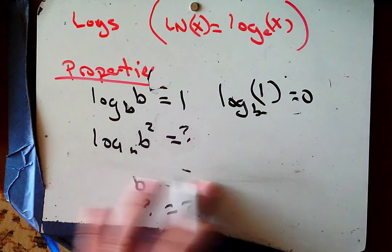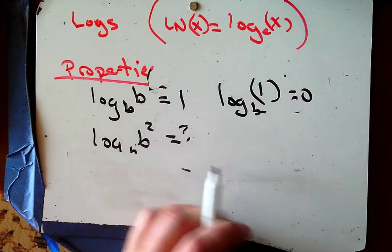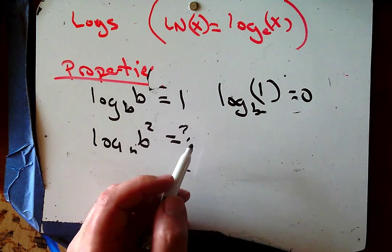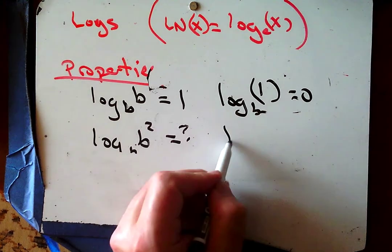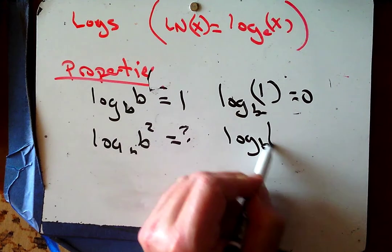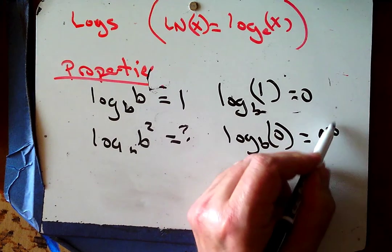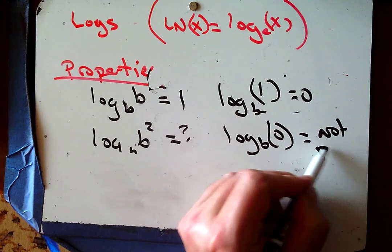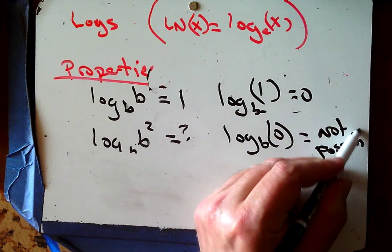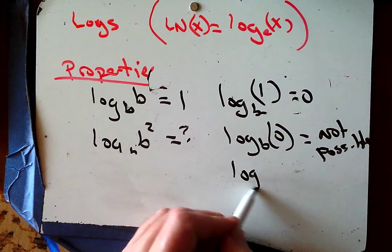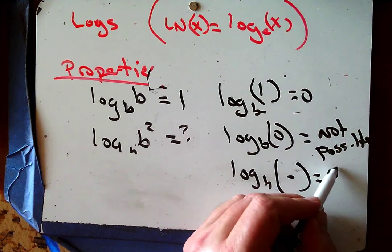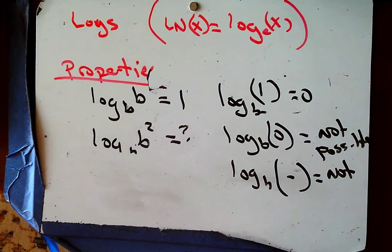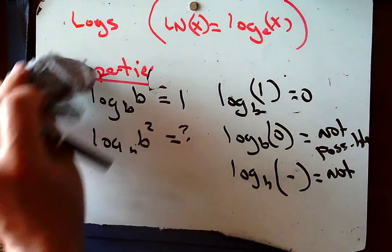We have a couple more basics. Remember that log base b of 0 is not possible, and log base b of a negative is also not possible. We know that from the graph we talked about in the last video.